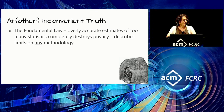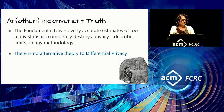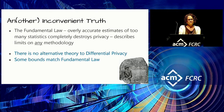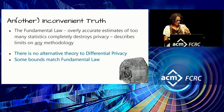The fundamental law says overly accurate estimates of too many statistics completely destroys privacy — this describes limits on any methodology. There is no alternative theory to differential privacy, and some upper bounds for certain kinds of problems — how well we can do with differential privacy — match up with the fundamental law. If you're going to avoid total privacy breakdown, you can't get more accurate than those algorithms do, by the fundamental law. This is the bind.